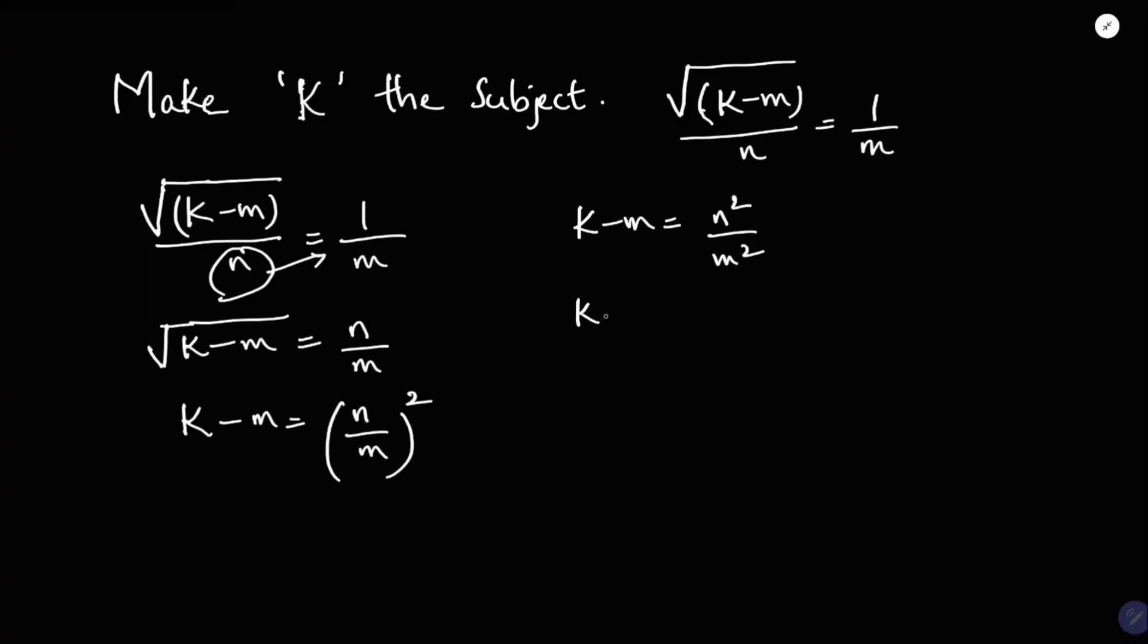So k equals n square minus m square by m square. If I will transpose, you will get here like plus m. So k equals,